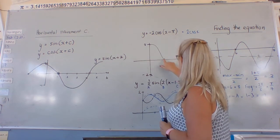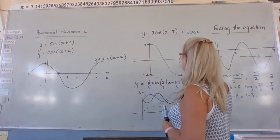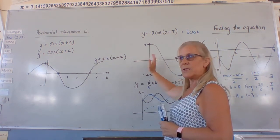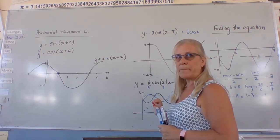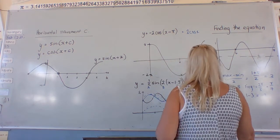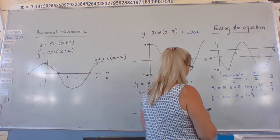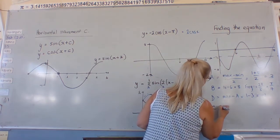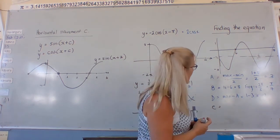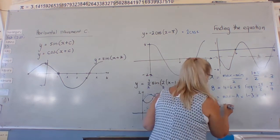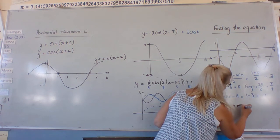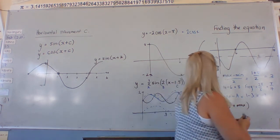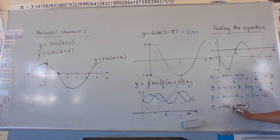So your cosine graph starts here; your sine graph started here — it's a quarter period difference. C is found by finding, for cosine, the maximum point. So what is the maximum point? It's here. What is that value?